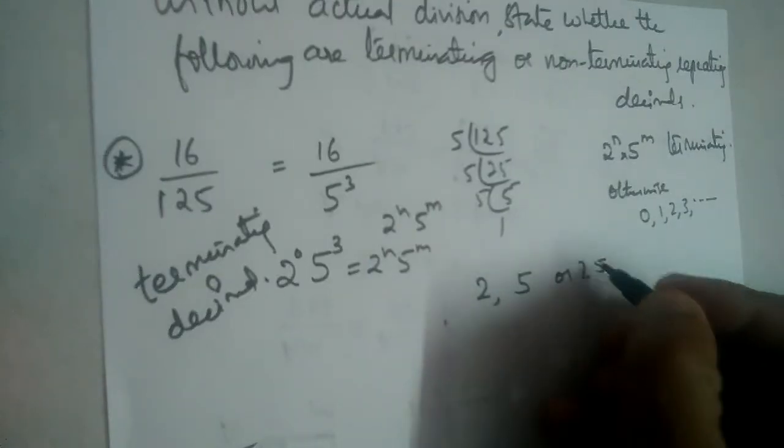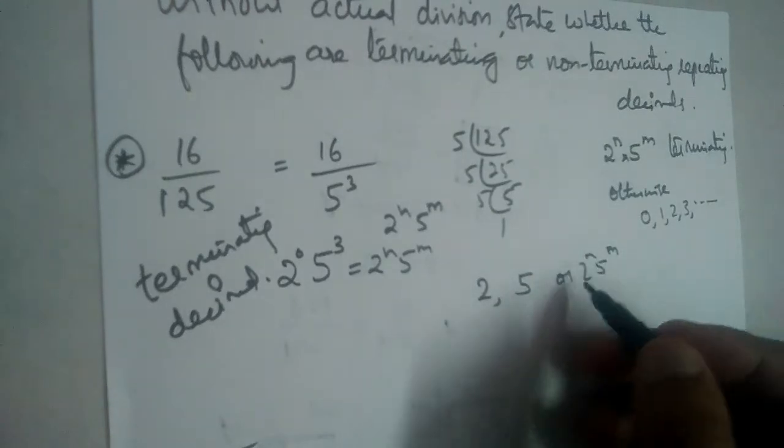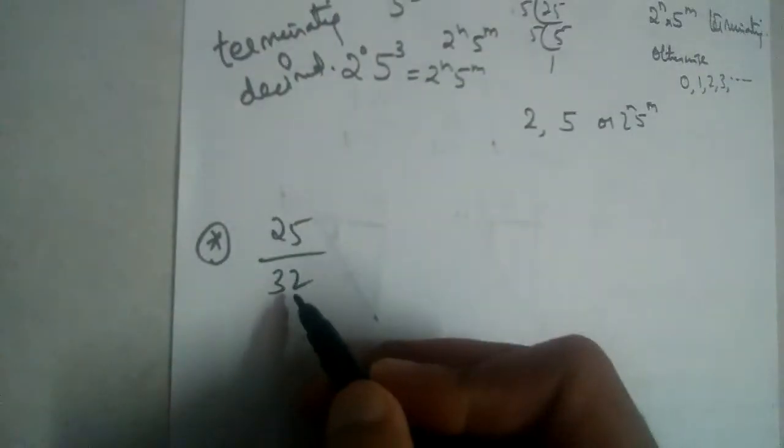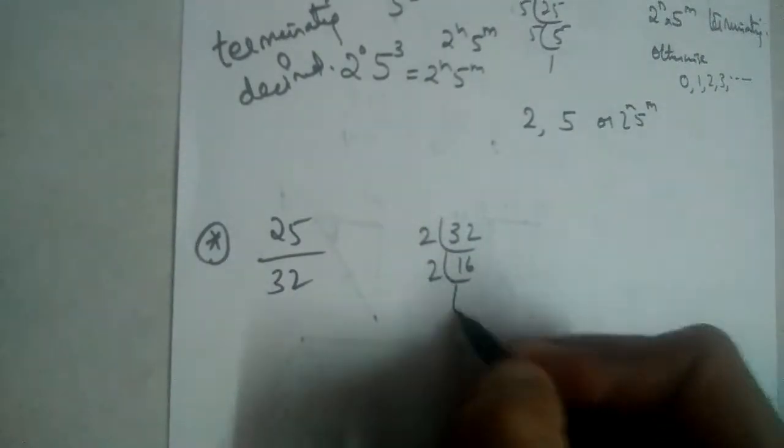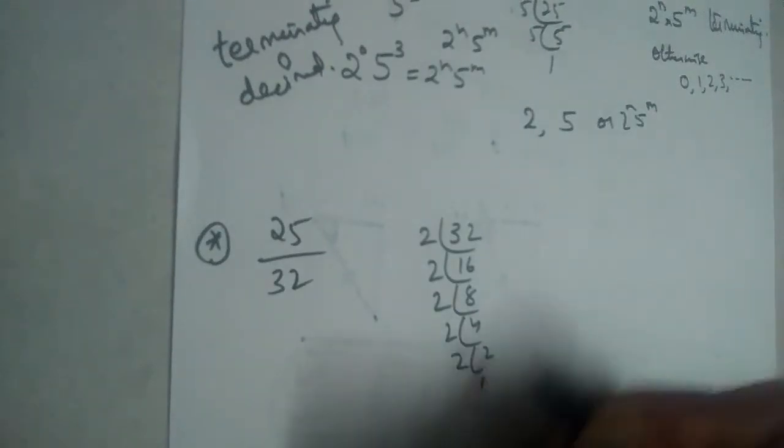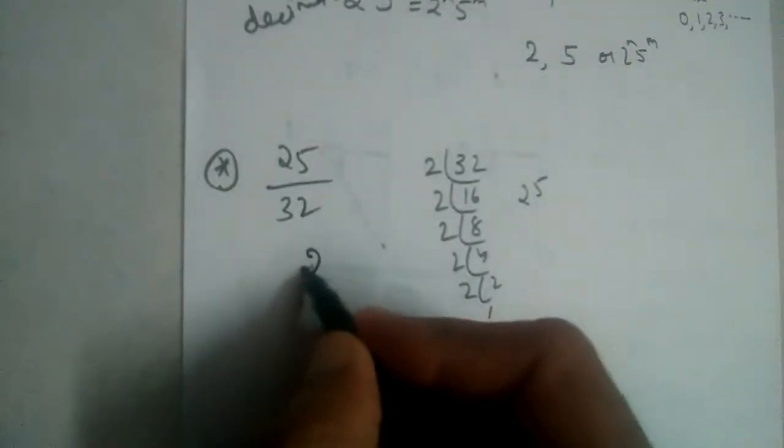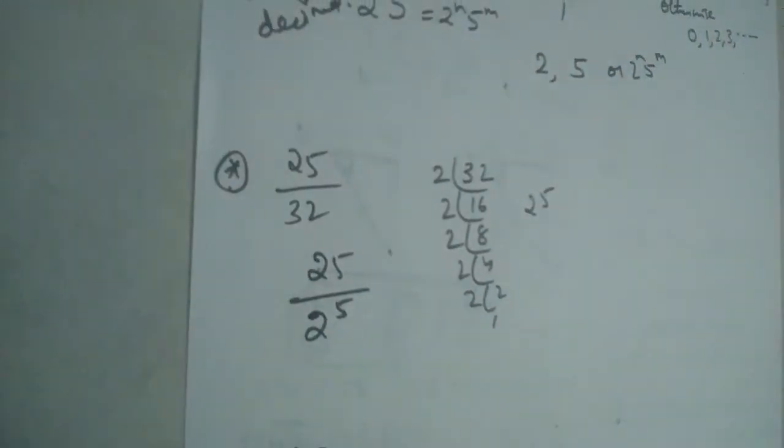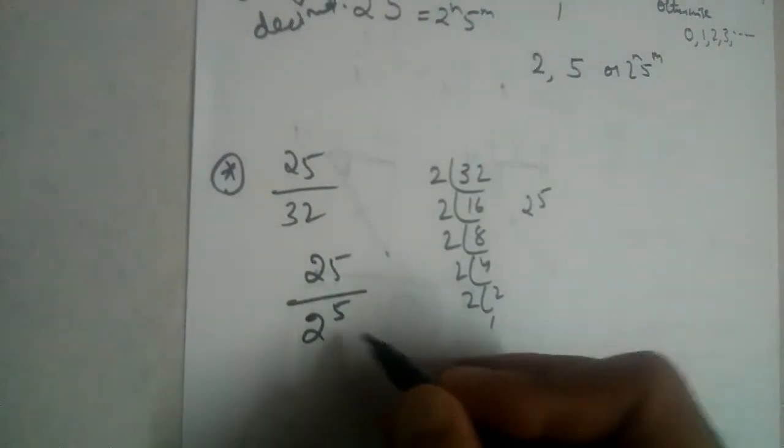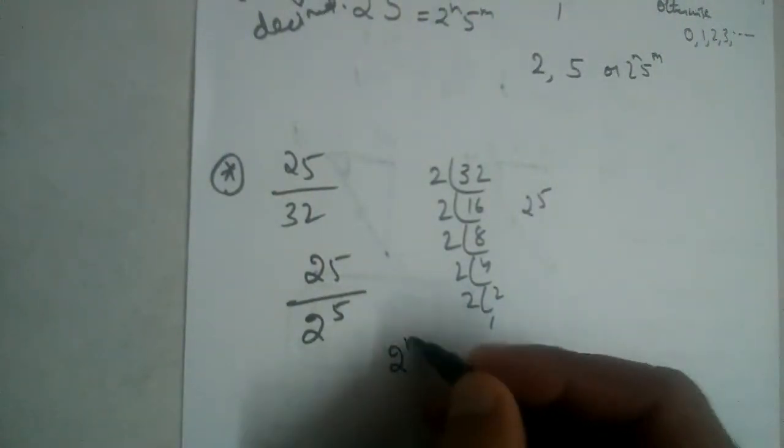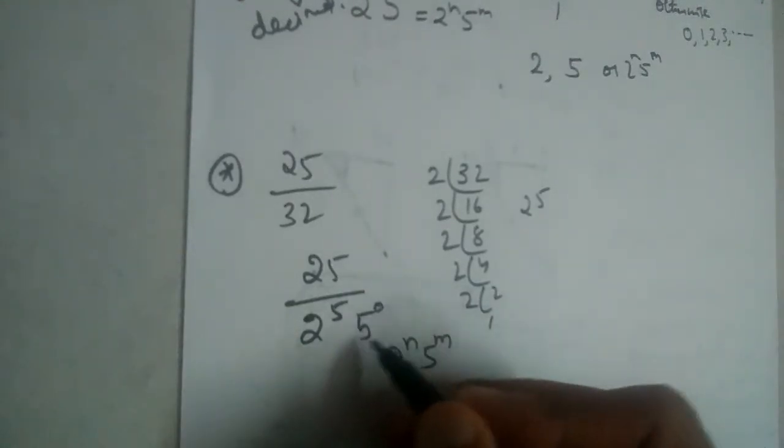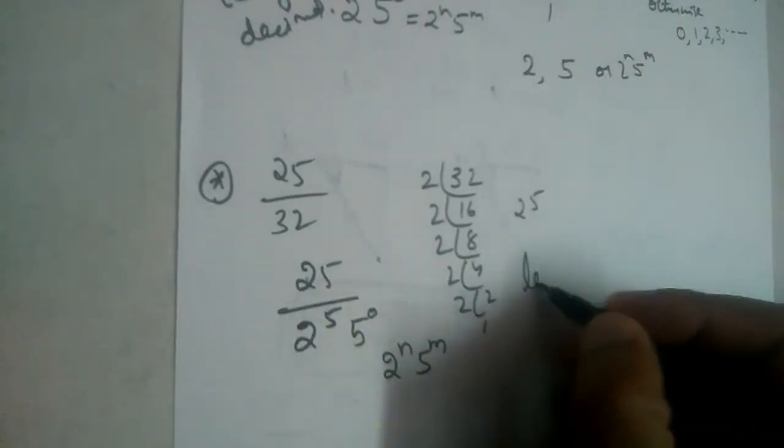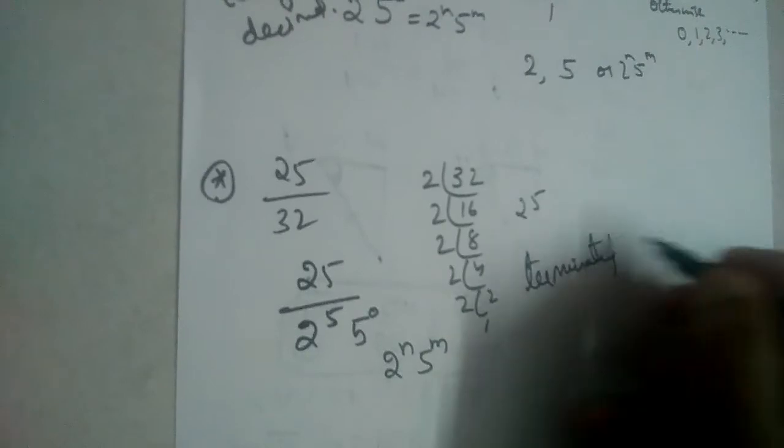So, 25 by 32, the next problem. Let us find prime factors of 32. It is 2 power 5. So 25 divided by 2 power 5. Now you tell me whether it is terminating or non-terminating. Terminating, right? Because the denominator is of the form 2 power n, 5 power m. n is equal to 5 and m is equal to 0. So, is it terminating? Yes, it is a terminating decimal.